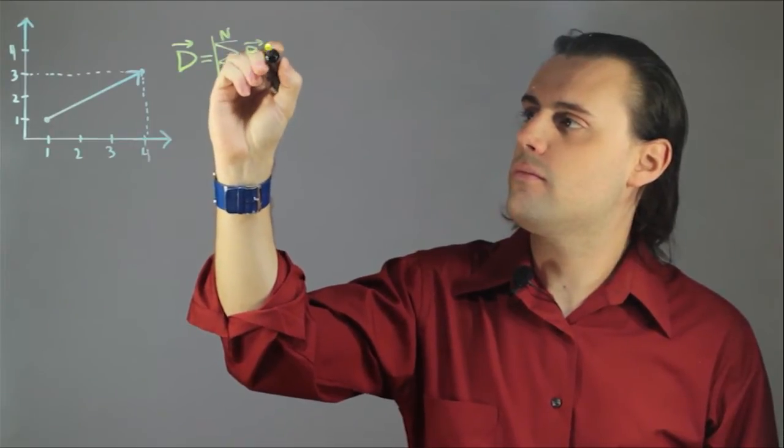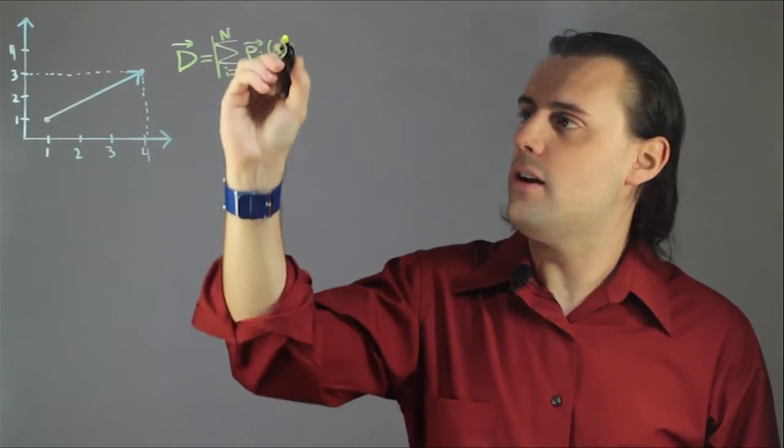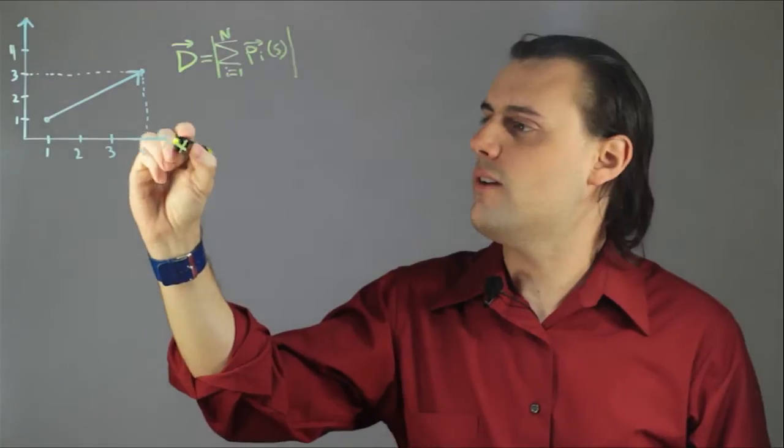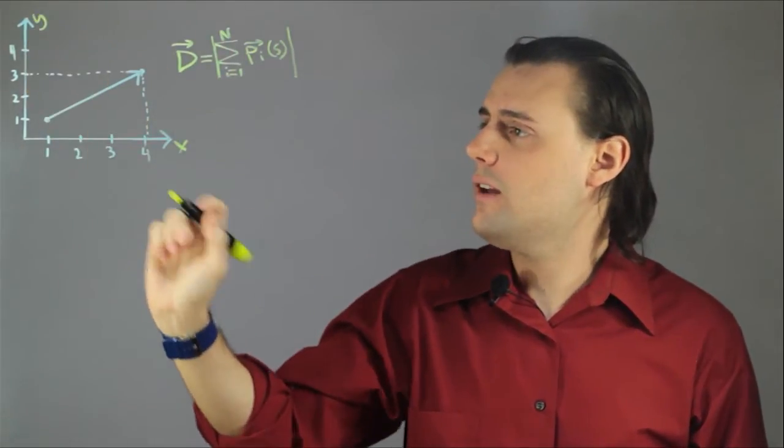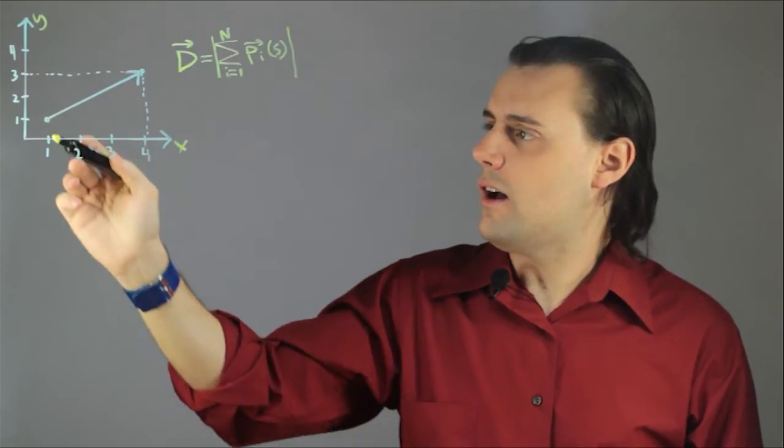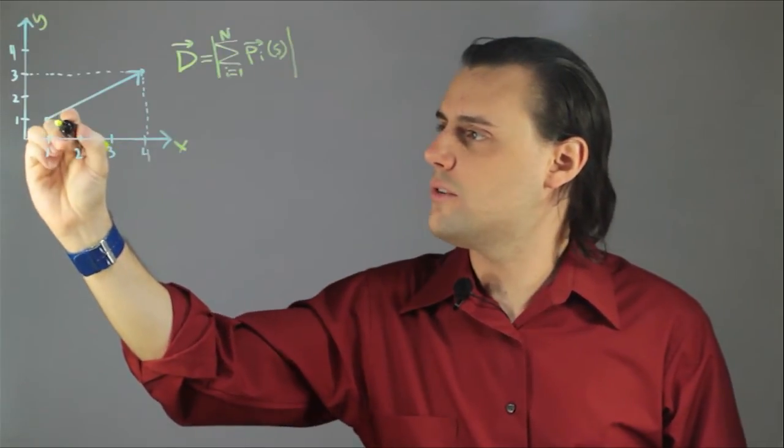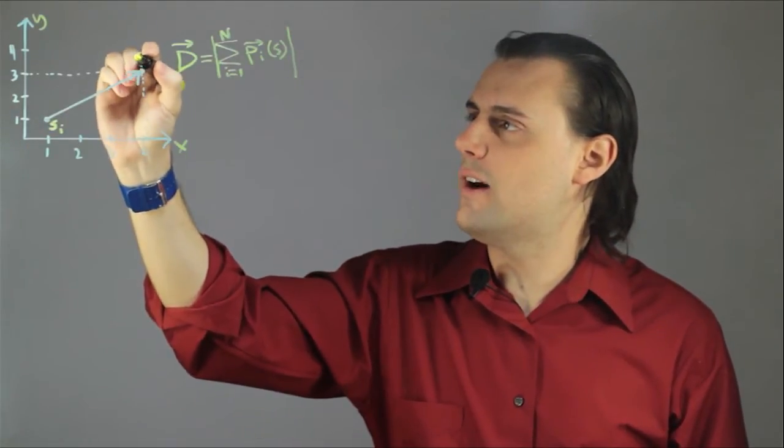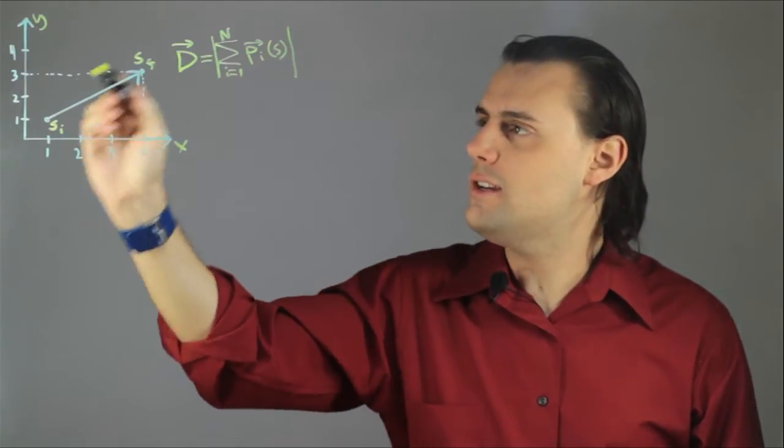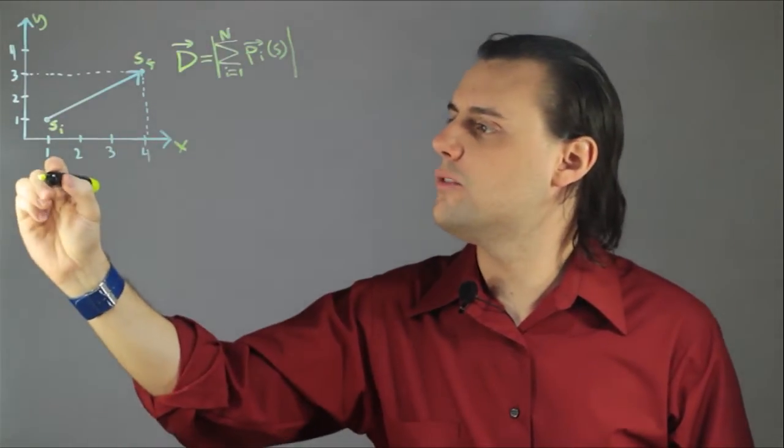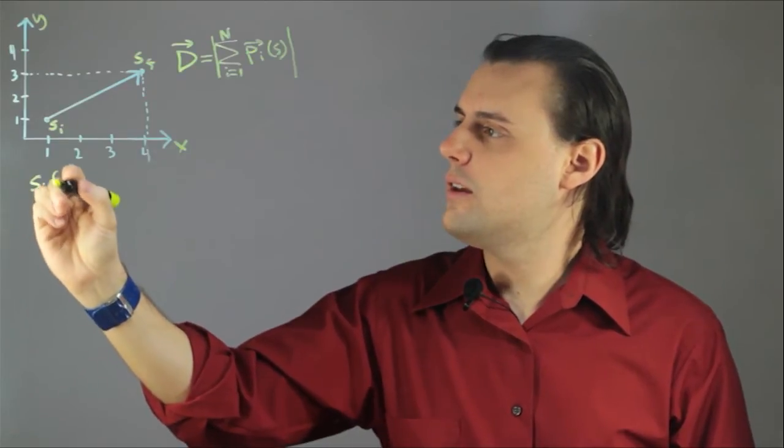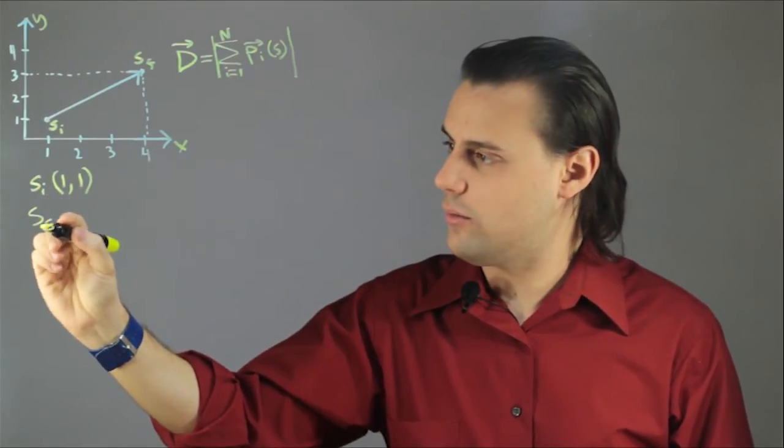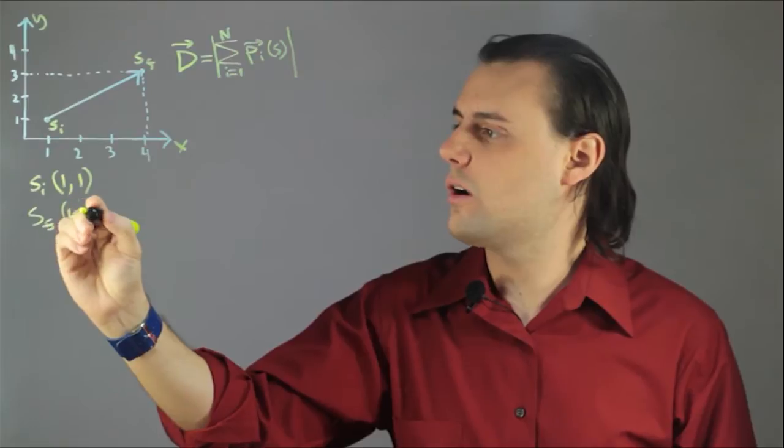If I consider a two-dimensional space here, where I have x and y as the two axes, I have an initial starting point, which I'm going to denote as s sub i for initial, and a final position, s sub f. Each of these points has a coordinate. So the initial position s i has coordinate 1, 1, and the final position has coordinates 4, 3.